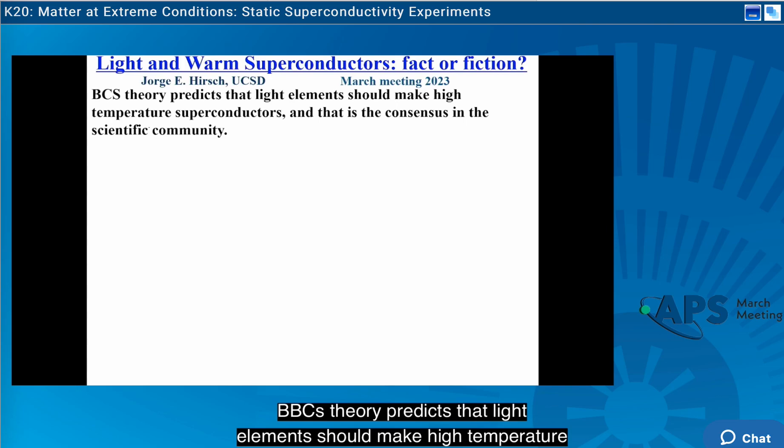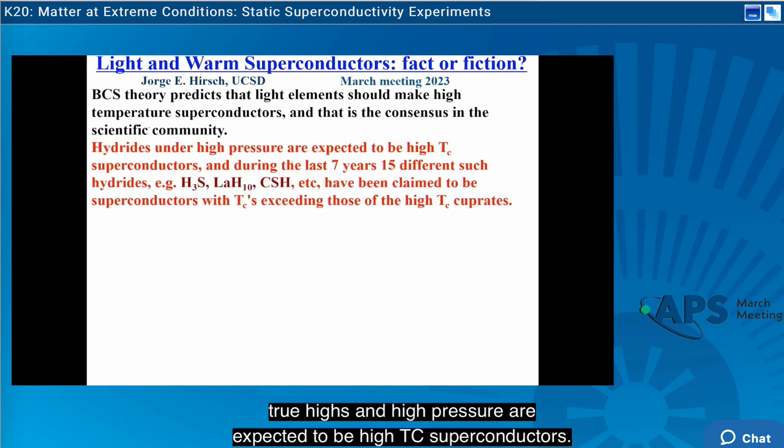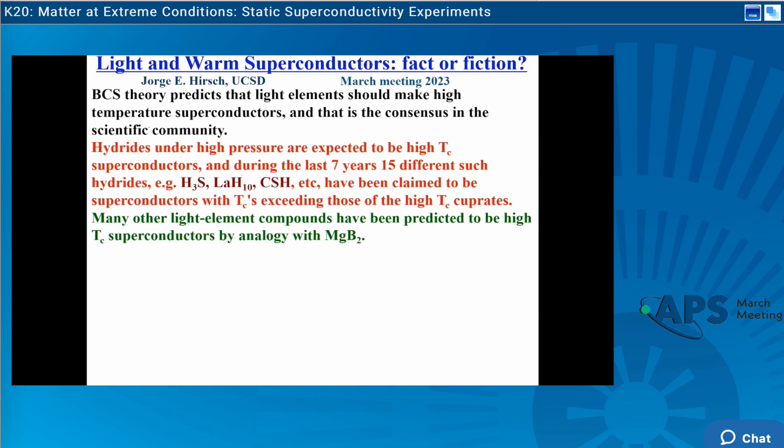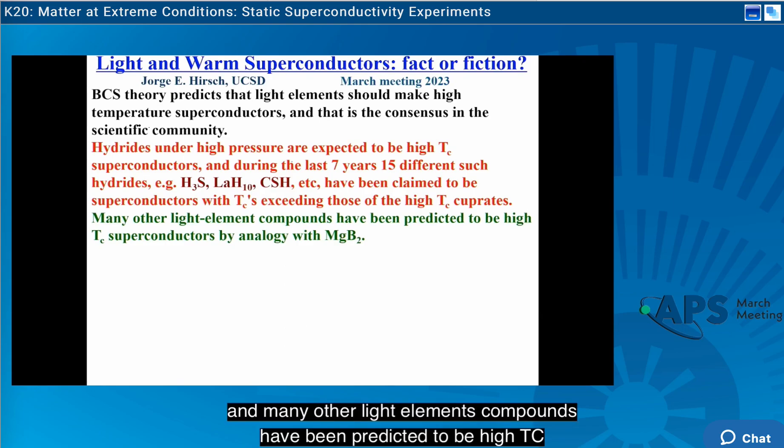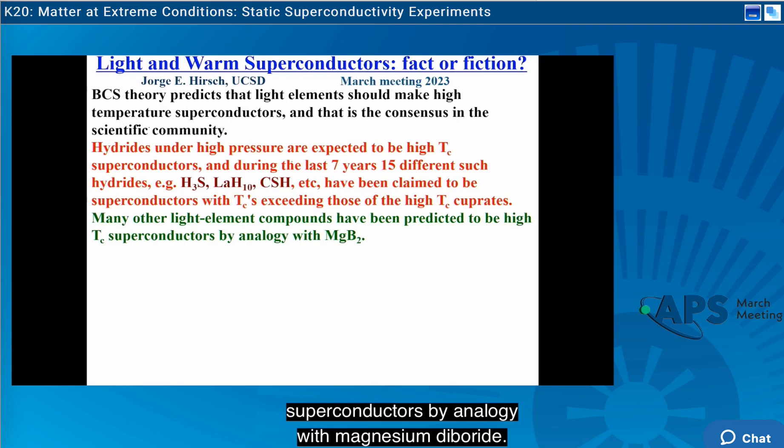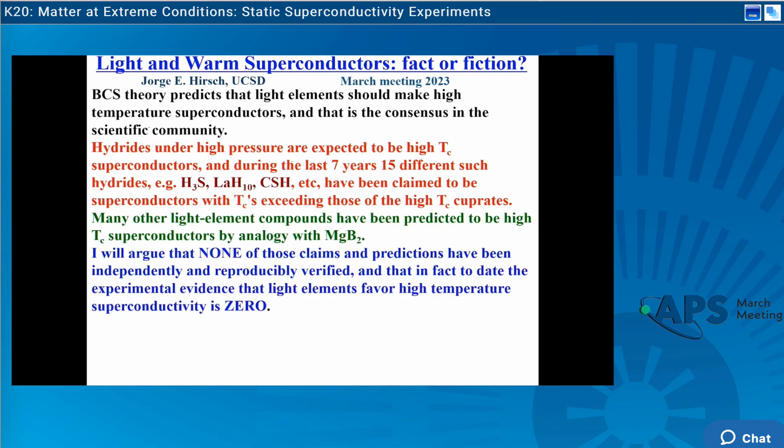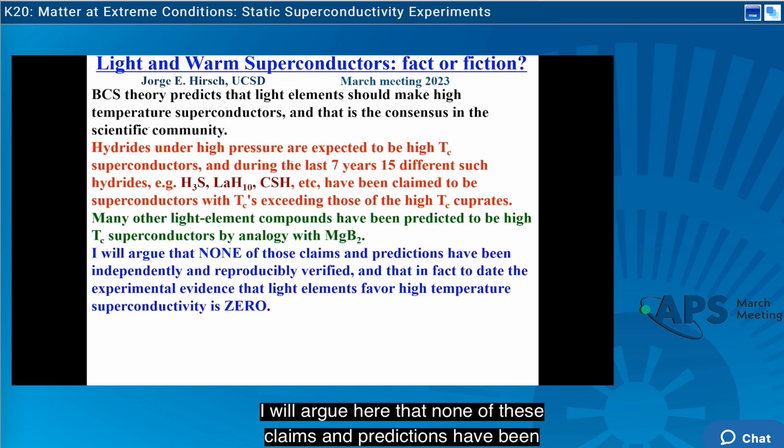BCS theory predicts that light elements should make high temperature superconductors, and most people here believe that's true. Hydrides under high pressure are expected to be high-TC superconductors, and during the last seven years, 15 different such hydrides have been claimed to be superconductors with TCs exceeding those of the high-TC cuprates. Many other light element compounds have been predicted to be high-TC superconductors by analogy with magnesium diboride.